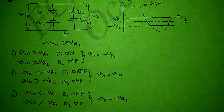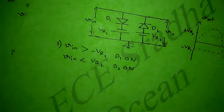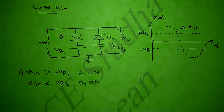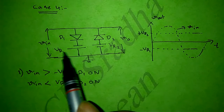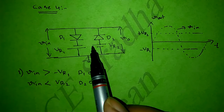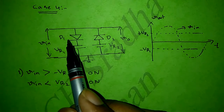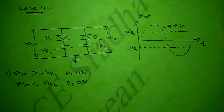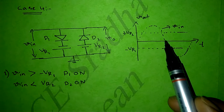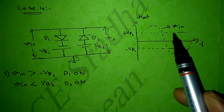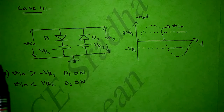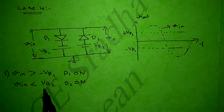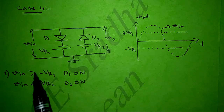The problem with Case 4 is that it is the vice versa of Case 1. In Case 1 we had VR1 and VR2; here I reversed the polarities — minus VR1 is connected to D1, and plus VR2 is connected to D2. I follow the same procedure: plotting the input and reference voltages with dotted lines. The first condition taken is V-in is greater than minus VR1, and V-in is less than plus VR2.